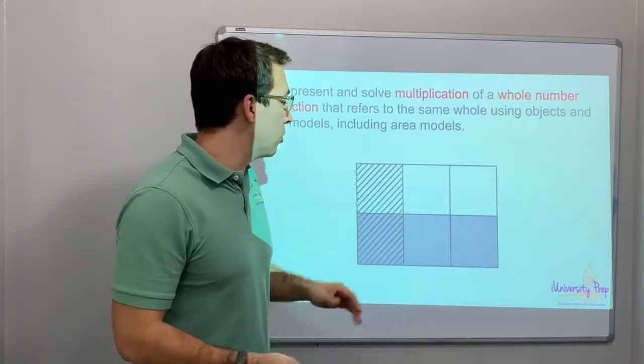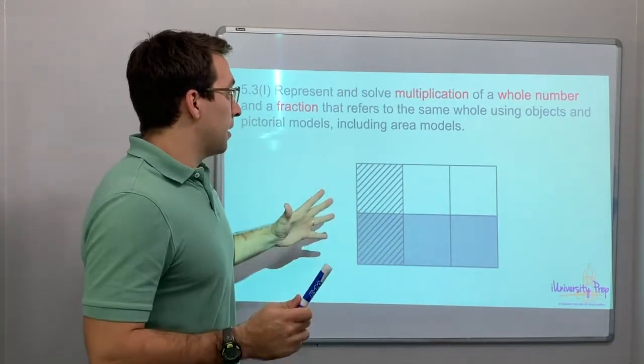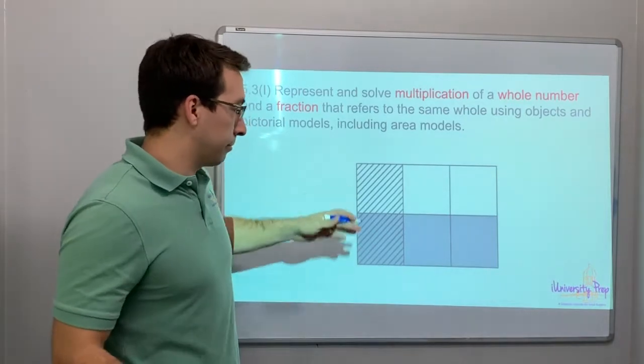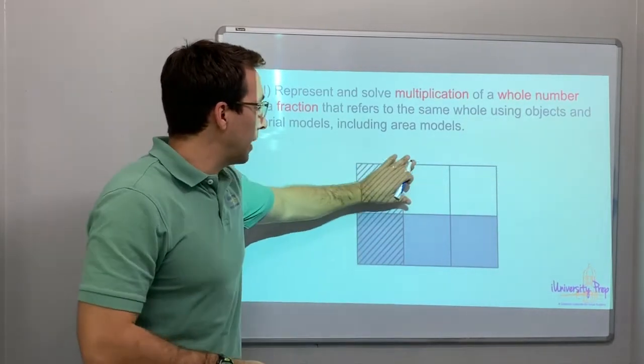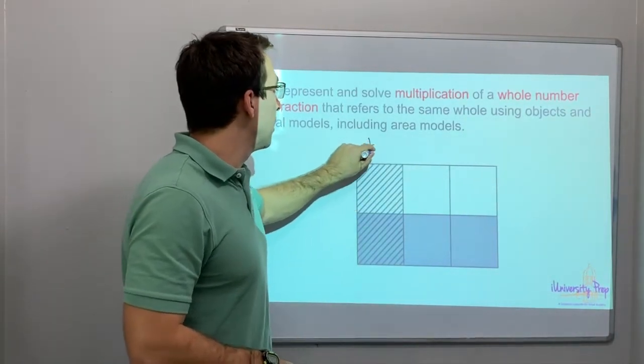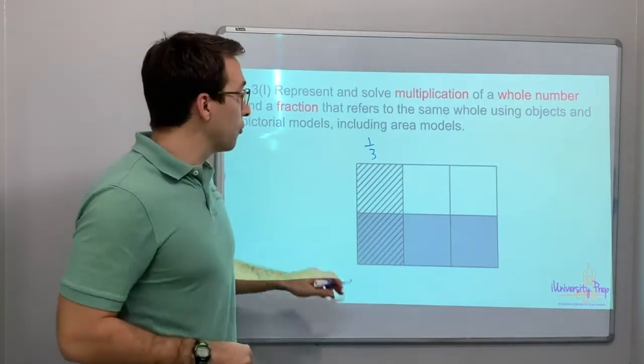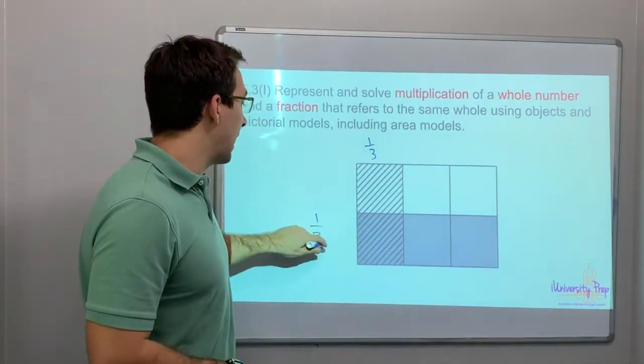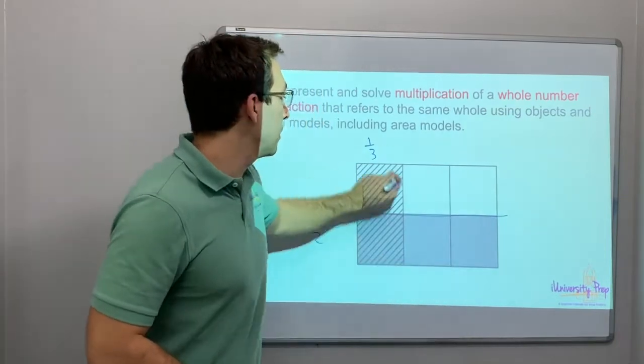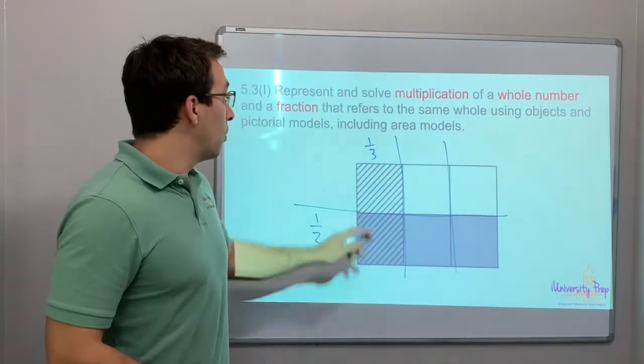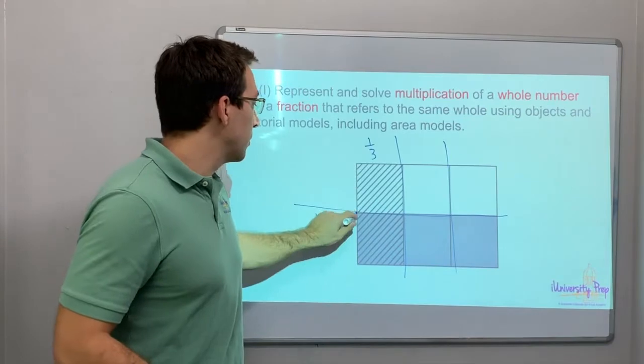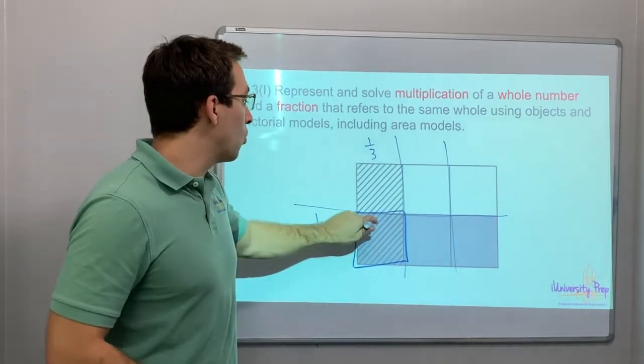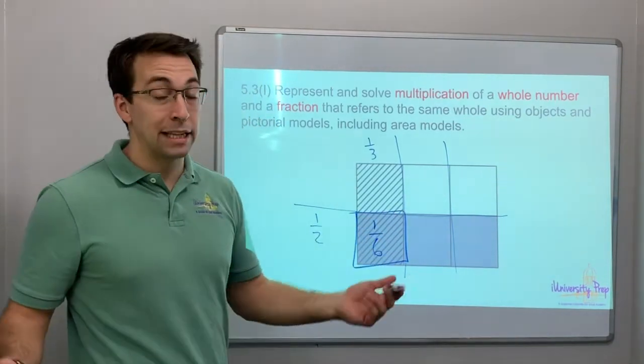If I multiply, look, this is one-third and I'm going to multiply it times one-half, because this is half of the square and this is one-third. What do you get? One-third times one-half, this is where they meet. You get one-sixth. That's pretty cool.